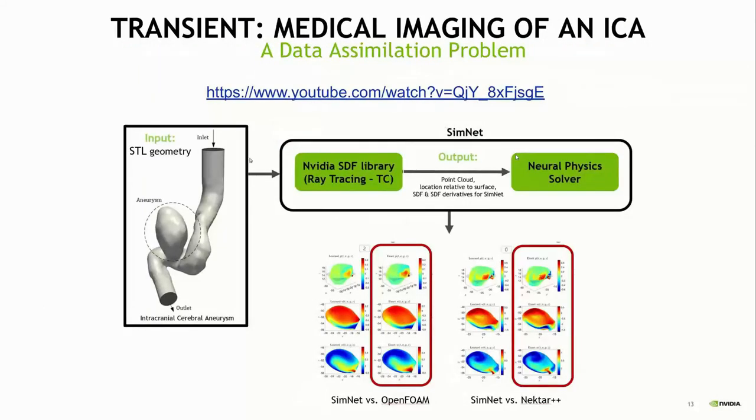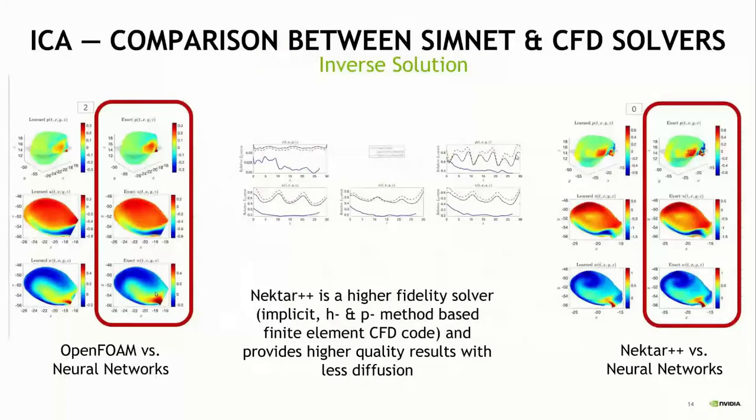We've also done this problem, which is an aneurysm. This is a data simulation problem. Essentially, we have this aneurysm geometry. There's some concentration dye that's introduced here at the inlet, and we have the concentration values for that dye as a function of time. But we don't know what the velocities and pressures are. We can do the same inverse problem kind of approach to back out the pressures. And because this is a complex geometry, sampling and things are a little more complicated. We have some interesting methods to use ray tracing hardware on the newer generation of GPUs to do that more efficiently.